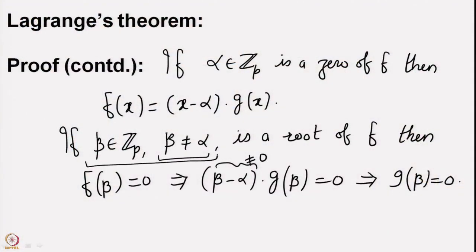Since p is prime and p divides the product (beta - alpha)·g(beta), and since (beta - alpha) is not 0 mod p, p must divide g(beta), so g(beta) = 0. Thus any other root beta is also a root of g. Now g has degree d-1 and we apply the induction hypothesis. We start induction with polynomials of degree 1: a linear polynomial with nonzero leading coefficient has a unique root.